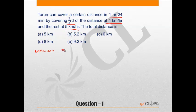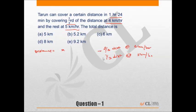Let's look at what we should be doing. The data says two-thirds of the distance at 4 km/h and one-third at 5 km/h. Since the distance is broken into two-thirds and one-third, it is advantageous to take the total distance as 3x rather than x. This means the first part becomes 2x kilometers and the second part becomes x kilometers, helping you get rid of decimals and making calculations easier.